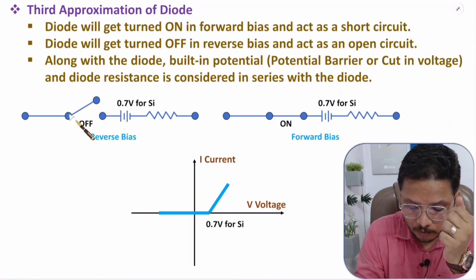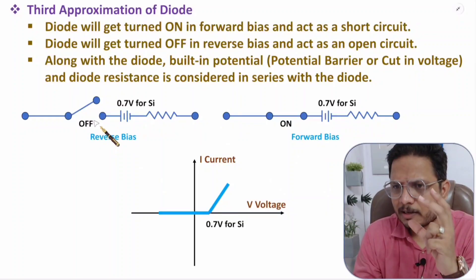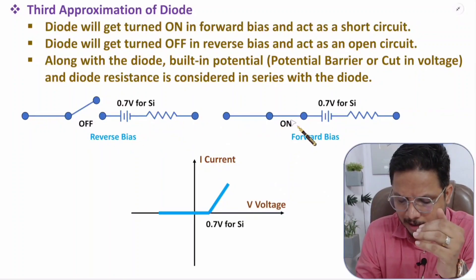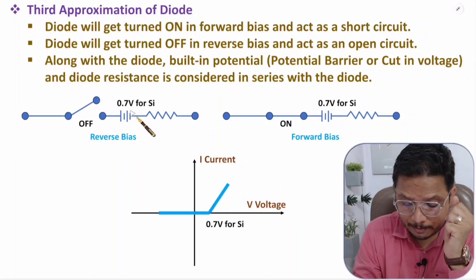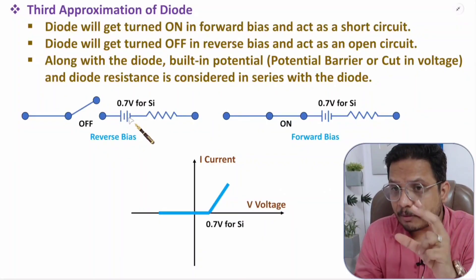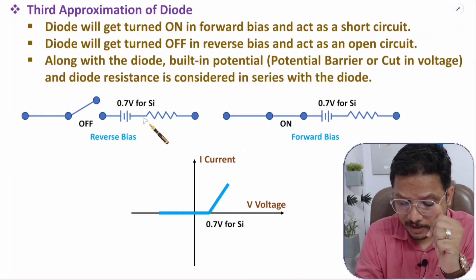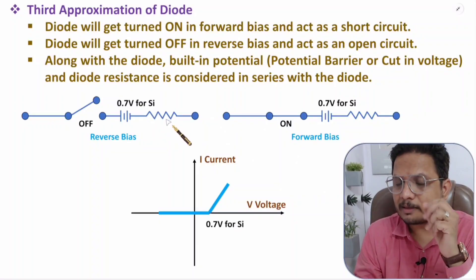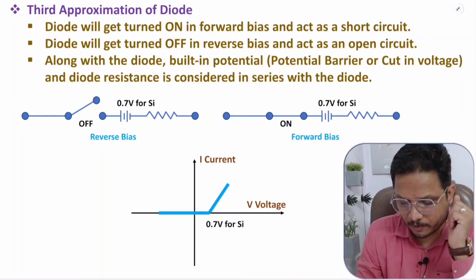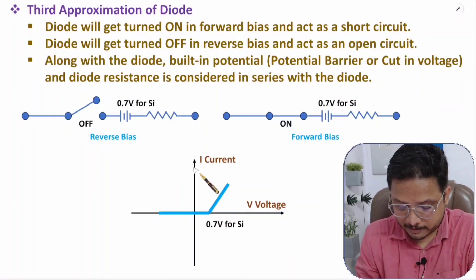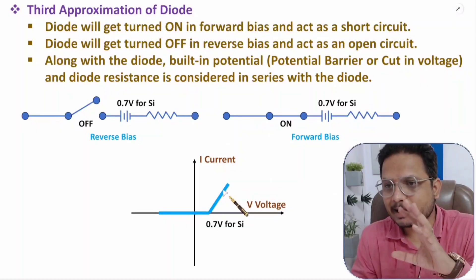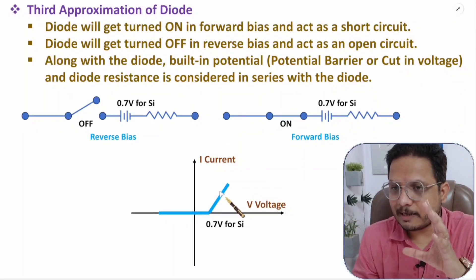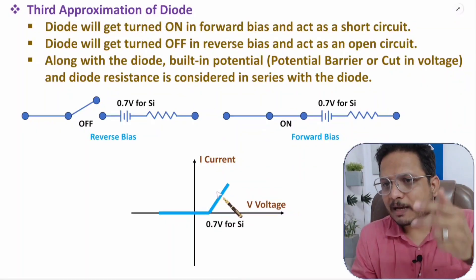We consider the total resistance, which is treated as linear in this approximation. In the equivalent circuit, along with the switch — which is on in forward bias and off in reverse bias — there is 0.7 V built-in potential and in series with that there is the diode resistance. In the VI characteristics, in forward bias after 0.7 V, current increases linearly.